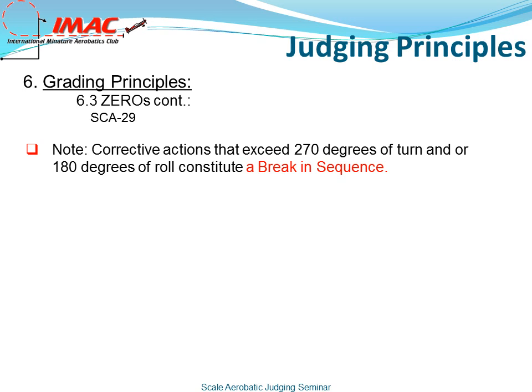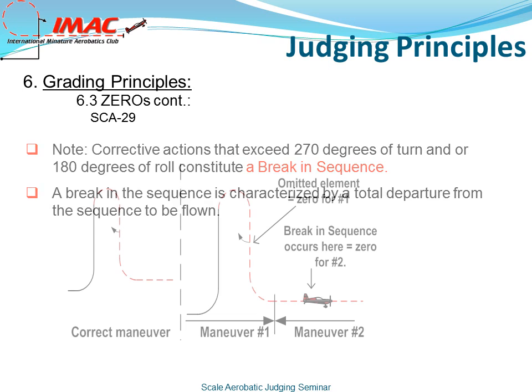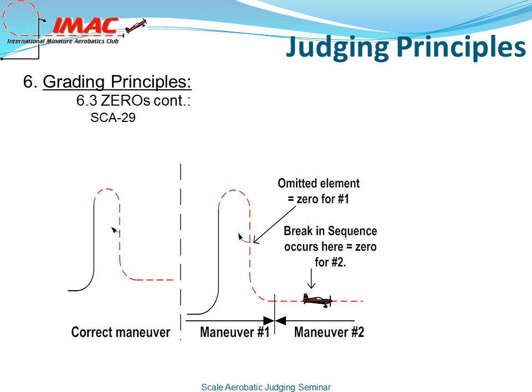Corrective actions that exceed 270 degrees of turn and/or 180 degrees of roll constitute a break in sequence. A break in sequence is characterized by the total departure from the sequence to be flown. In this case, the pilot omitted the half roll and exited the maneuver incorrectly. In maneuver number two, the pilot is now disoriented. He performs more than the 270-degree turn and more than a 180-degree roll. The pilot flew around to get his bearings back before he could fly the next maneuver. Maneuver number one receives a zero for omitting the half roll. A break penalty is assessed and maneuver number two is also zeroed because he performed a break in sequence.